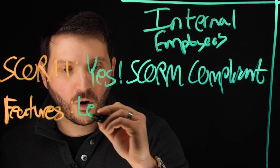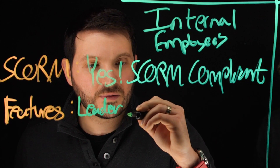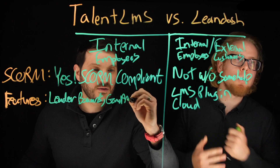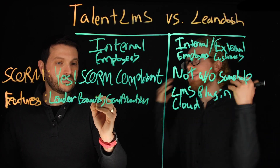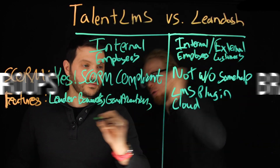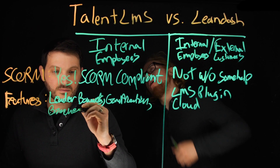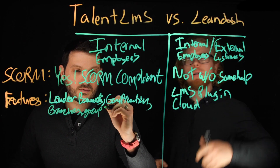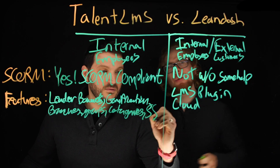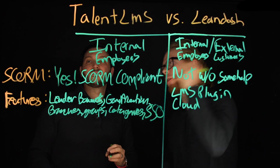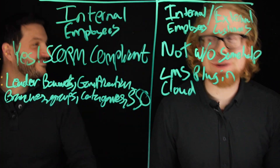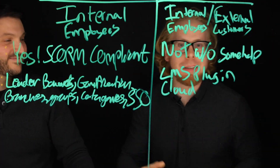TalentLMS, on the other hand, has a bunch of additional features — leaderboards and gamification, which is already built in and very easy to use. You can also customize TalentLMS extensively with branches, groups, and categories. It also supports SSO — single sign-on — so just like using your Gmail or Facebook to log into other apps, you can do the same thing with TalentLMS.